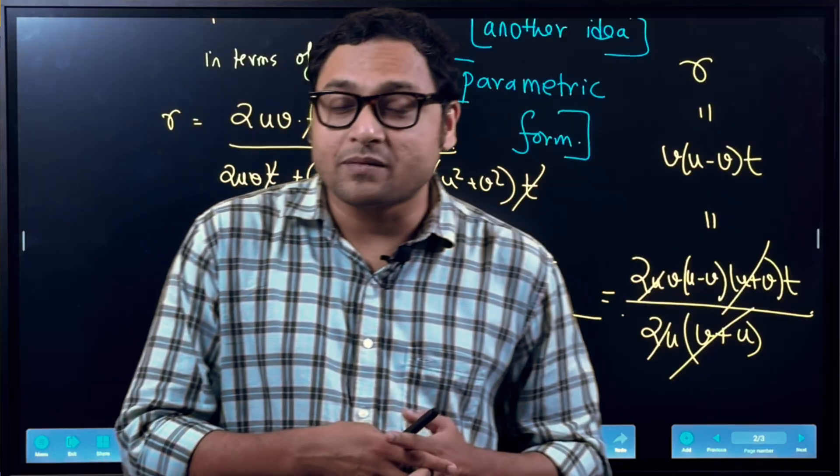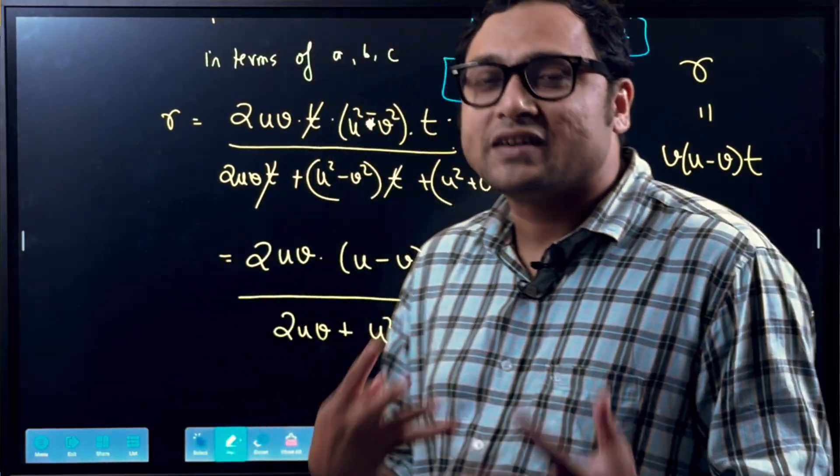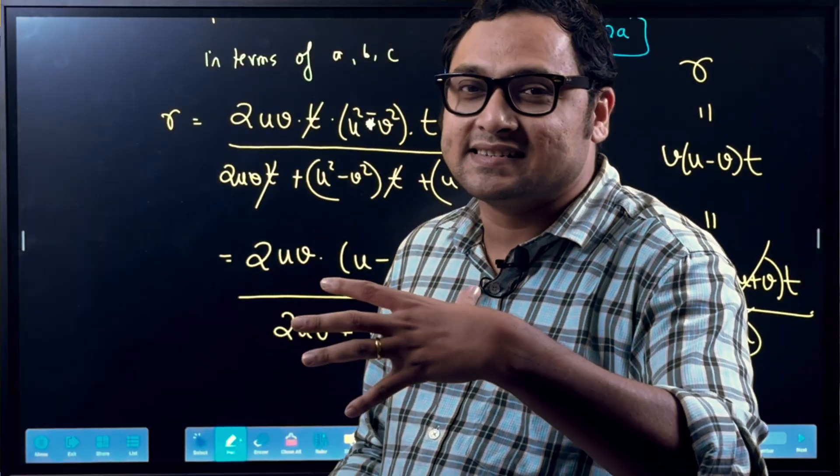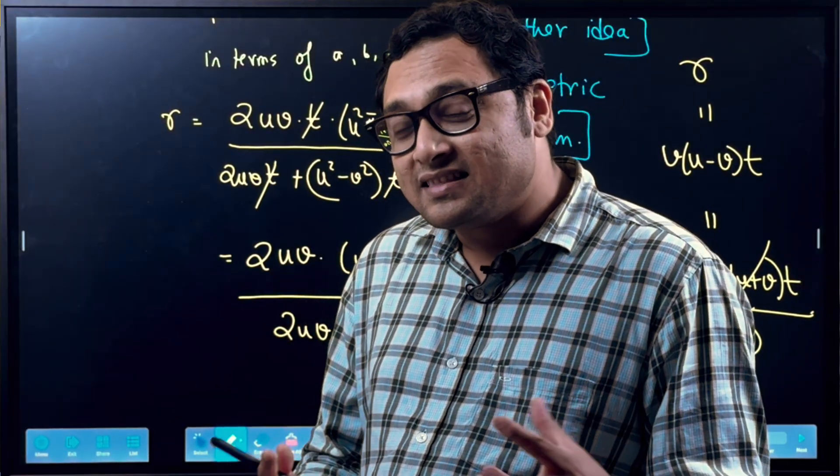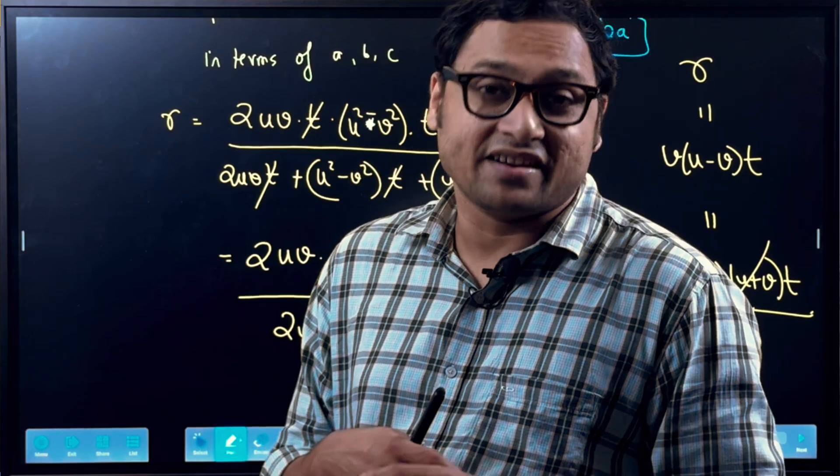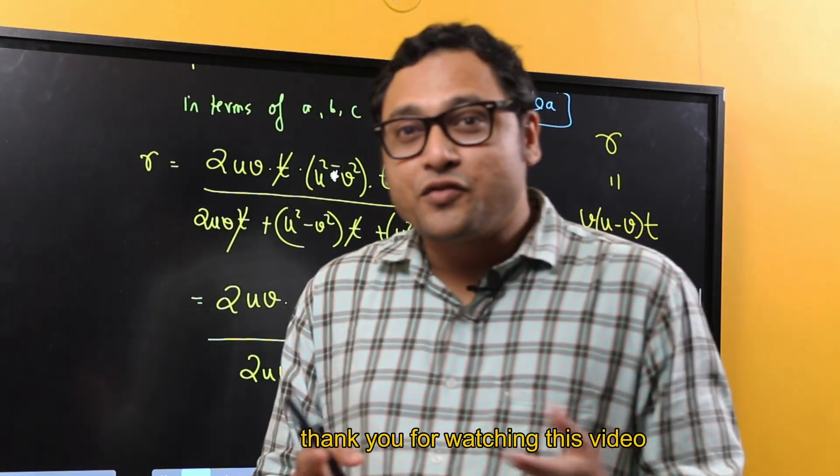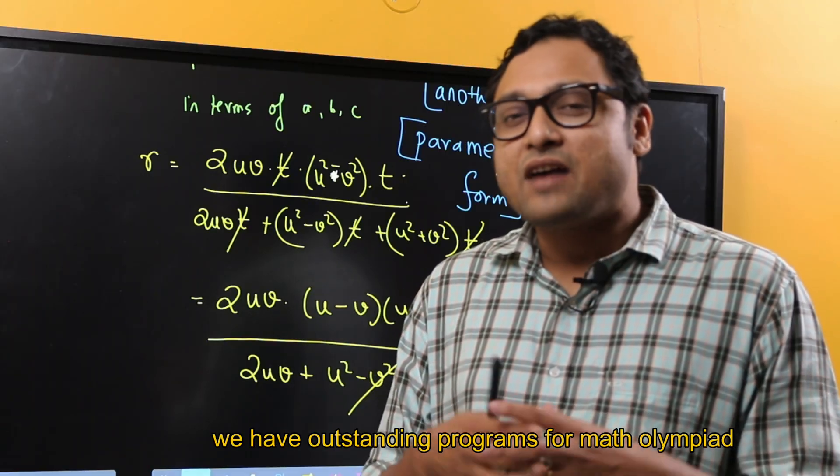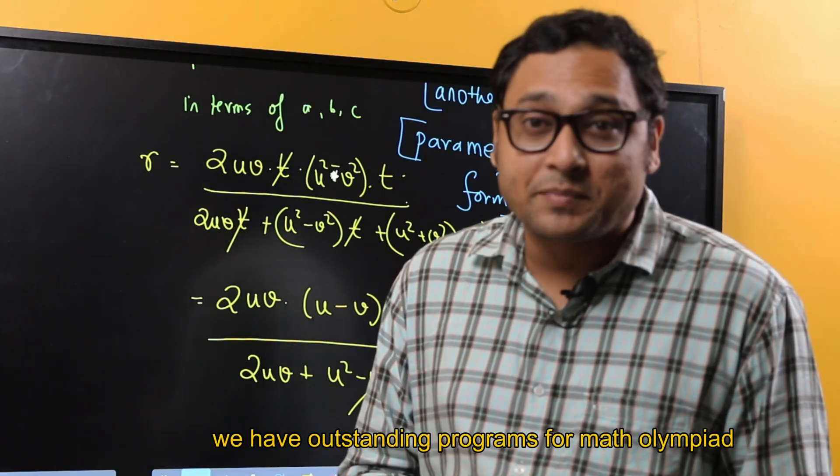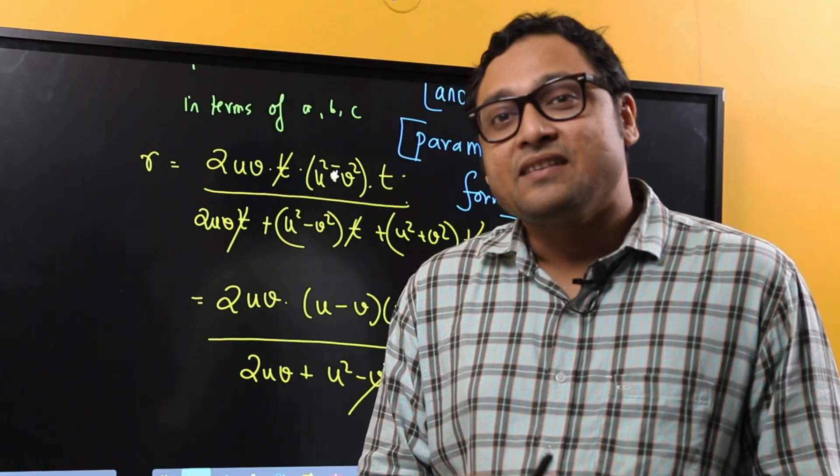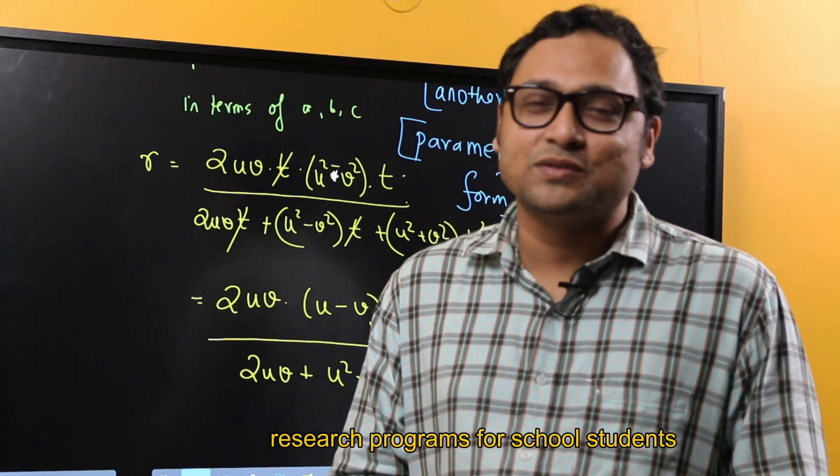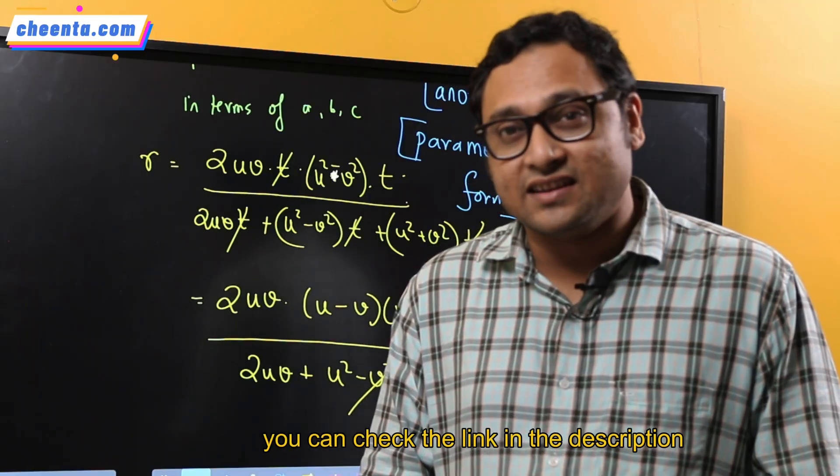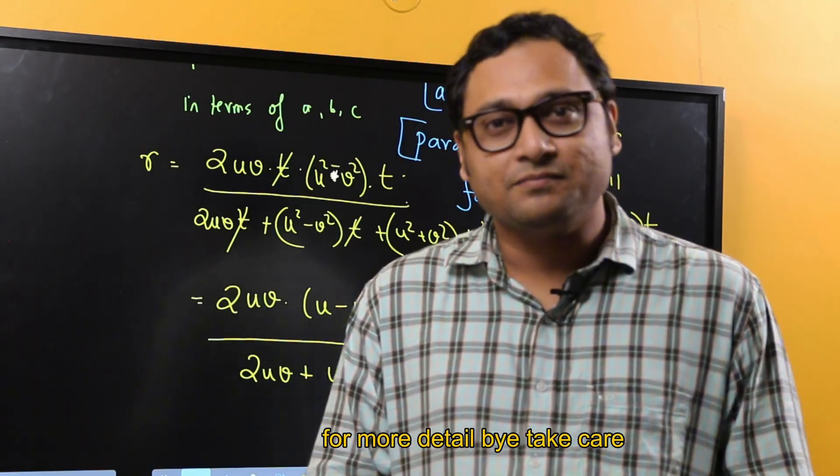I hope you learned something from this video. It's a very interesting problem that brings in the notion of in-radius with the parametric form of the sides of a right-angled triangle. Thank you for watching this video. If you like our videos, please subscribe to our channel. We have outstanding programs for math olympiad, physics olympiad, computer science olympiad, research programs for school students, and leadership programs. I think you will like it. You can check the link in the description for more detail. Bye, take care.